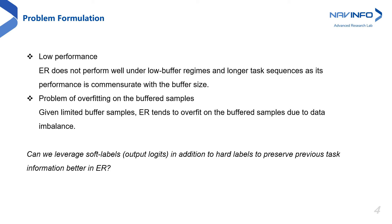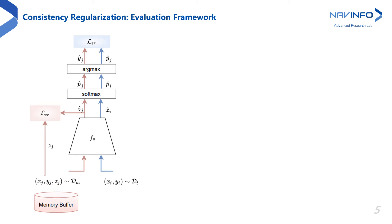Consistency regularization is relatively new to continual learning and has not been well explored. Therefore, we study the effectiveness of consistency regularization in continual learning and investigate its role in mitigating catastrophic forgetting under a common framework. The core idea of consistency regularization is simple: the input image is perturbed in semantic-preserving ways, and the model's sensitivity to perturbations is penalized. The consistency regularizer forces the model to learn representations invariant to semantic-preserving perturbations. In our case, we enforce consistency on the current and past predictions of the buffered samples.